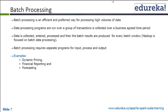A batch window means the time period in which the batch runs. Hadoop is typically used for batch processing. Examples include financial reporting, forecasting, and dynamic pricing — though dynamic pricing in some cases has become near real-time as well. These are typically called batch processing systems, and we have been using Hadoop for them for quite a long time.